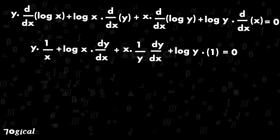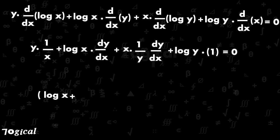On separating the terms and taking dy by dx common, we have log x plus x upon y dy by dx is equals to minus of y upon x plus log y.